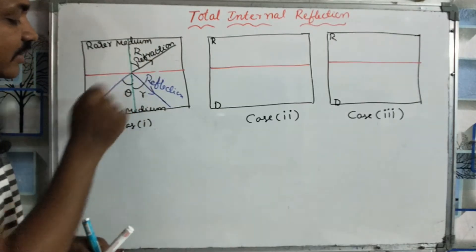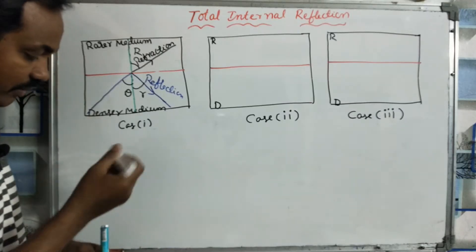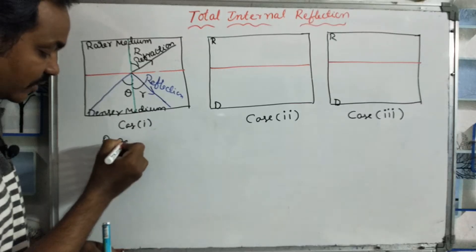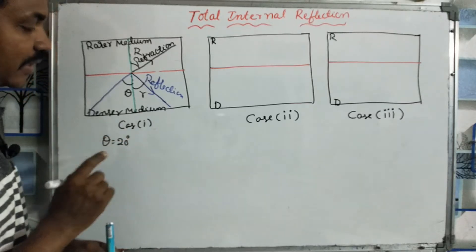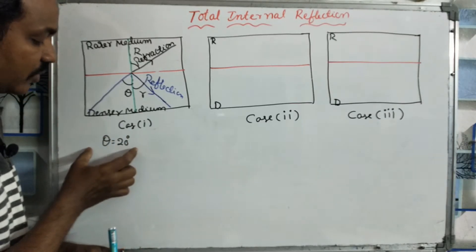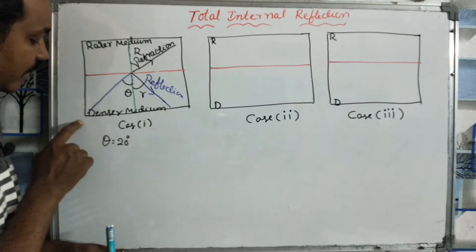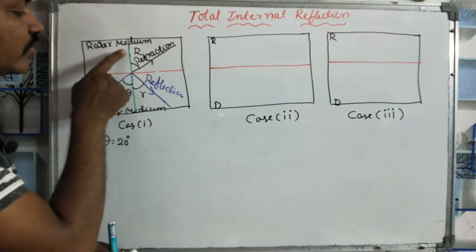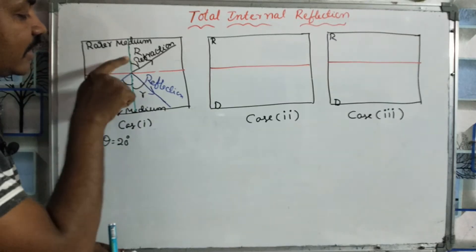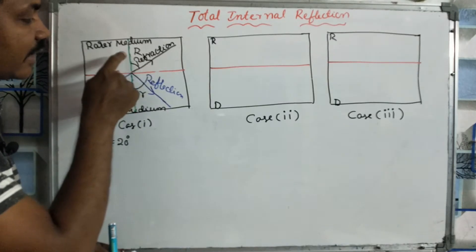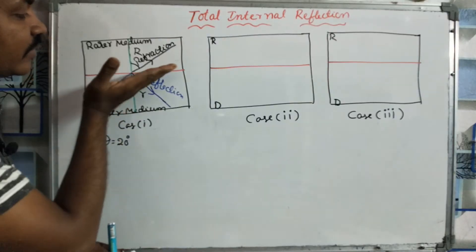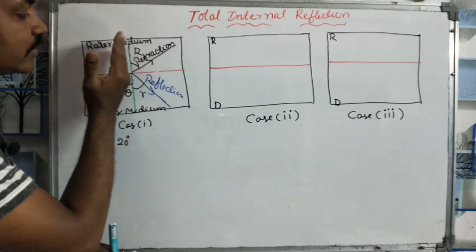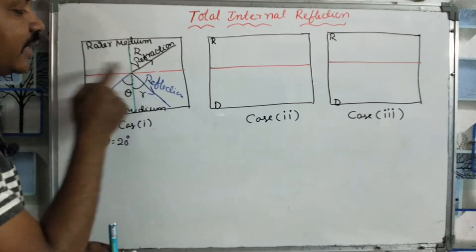This is an angle. Imagine that this angle is more than a value — say theta equals 20 degrees. This is a denser medium and a rarer medium. When going from denser to rarer, the refracted ray moves away from the normal. This is refraction bending away from the normal.